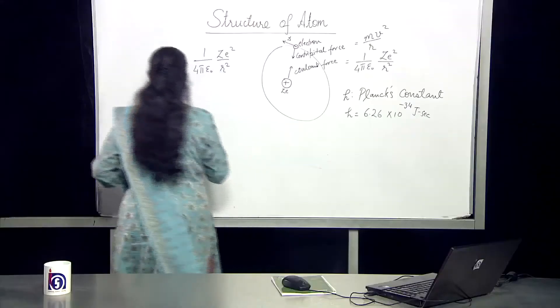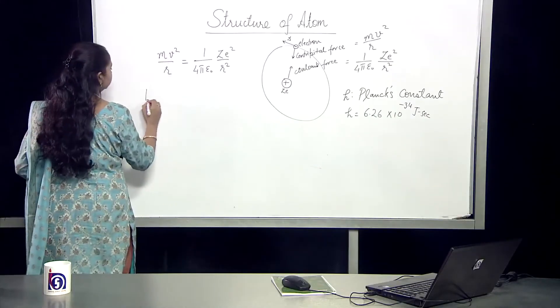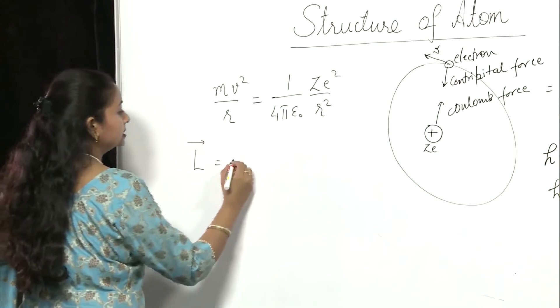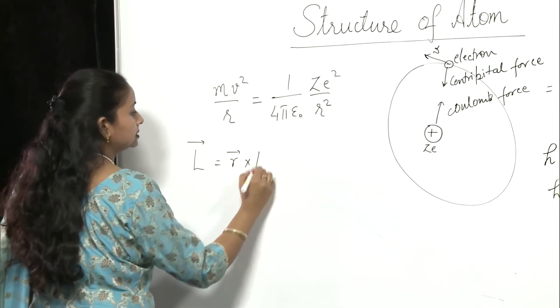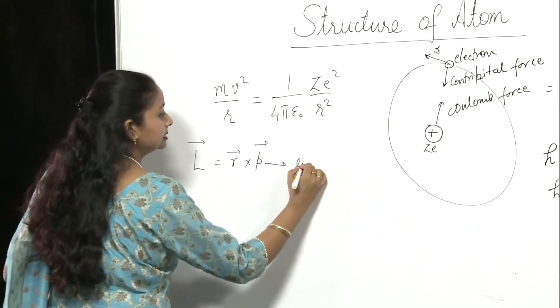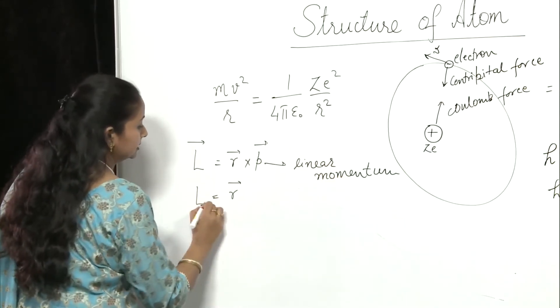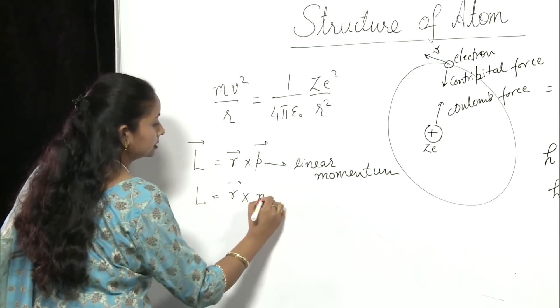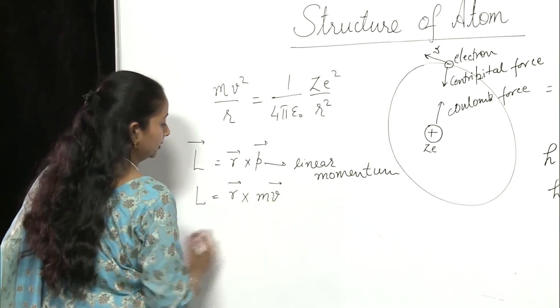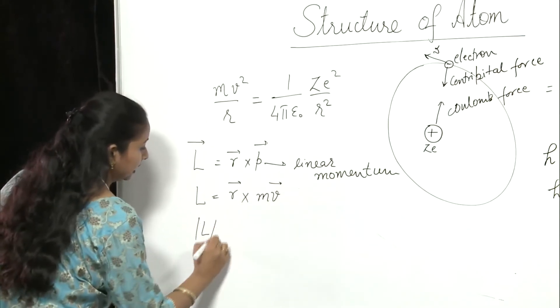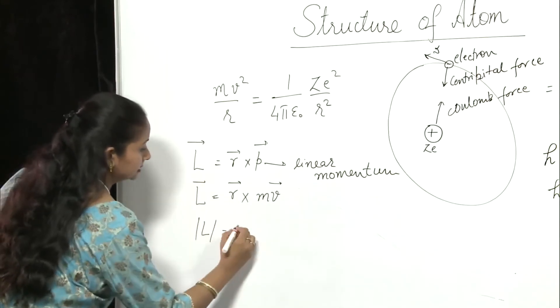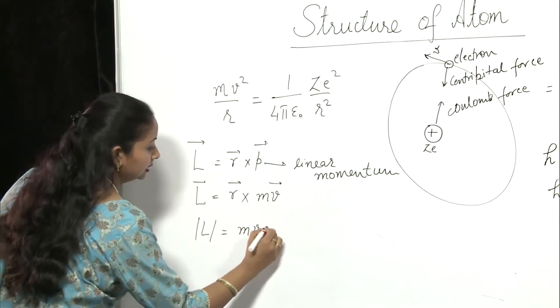So the angular momentum L which is given by r cross p where p is the linear momentum. So L is equal to r cross m into v. So the magnitude of L is mvr.